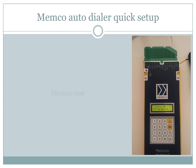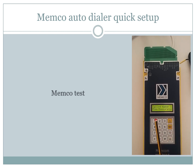The final step is to test by pressing the bell key. The autodialer should now call the first number that is stored.